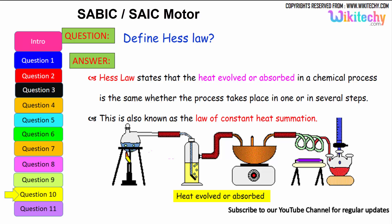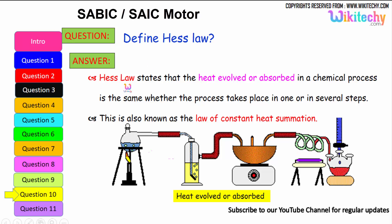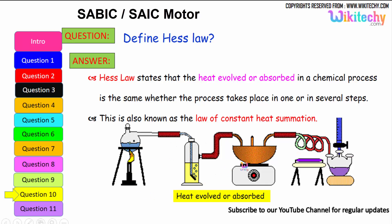Define Hess's Law. This is one of the very important questions. In the case of generating heat between an object and its emissions, Hess's Law states that the heat evolved or absorbed in a chemical process is the same whether the process takes place in one step or in several steps. This is also known as the law of constant heat summation.